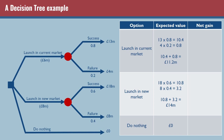Looking at those figures you'd say launching the new market is the best idea, but we haven't yet considered how much it's actually going to cost. That's where the net gain comes in. For net gain, all we do is subtract the initial cost shown on the decision tree - the 6 million and 8 million in brackets indicate they're costs. So 11.2 million minus 6 million is 5.2 million, and 14 million minus 8 million is 6 million. Doing nothing has no cost and no return, so that's zero pounds.